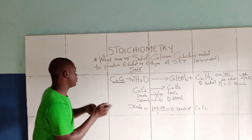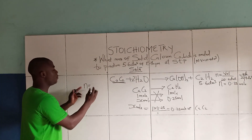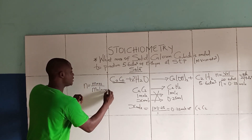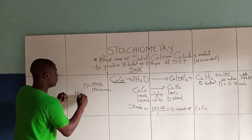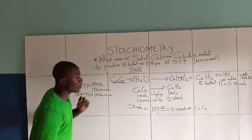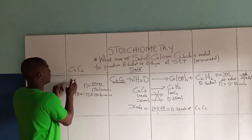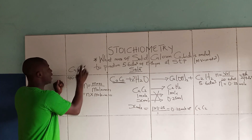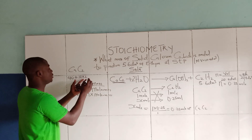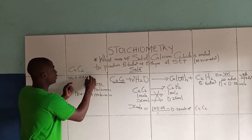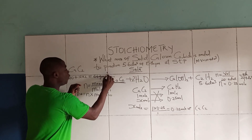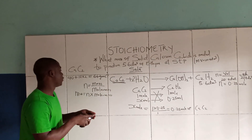The question asks for mass, so we use the formula: moles = mass ÷ molar mass, which gives mass = moles × molar mass. Let's find the molar mass of calcium carbide, CaC₂. Calcium is 40 and carbon is 12; since we have two carbon atoms that's 12 × 2 = 24. So molar mass = 40 + 24 = 64 g/mol.